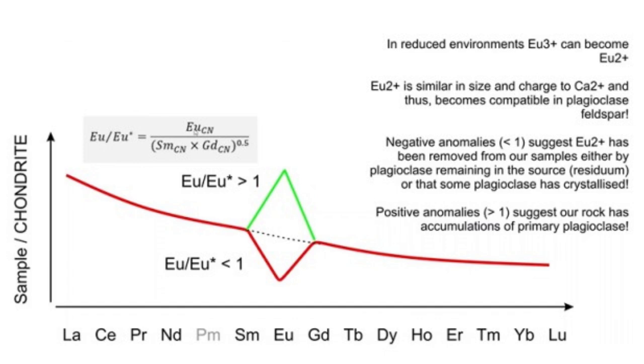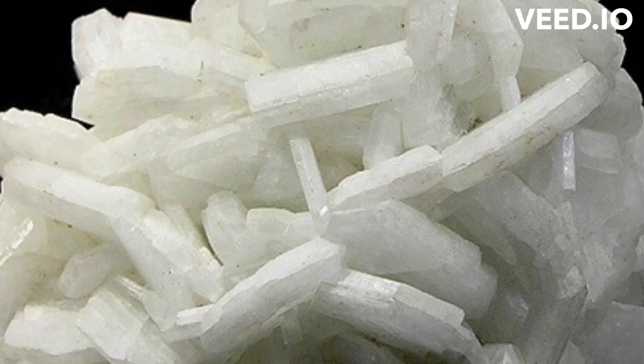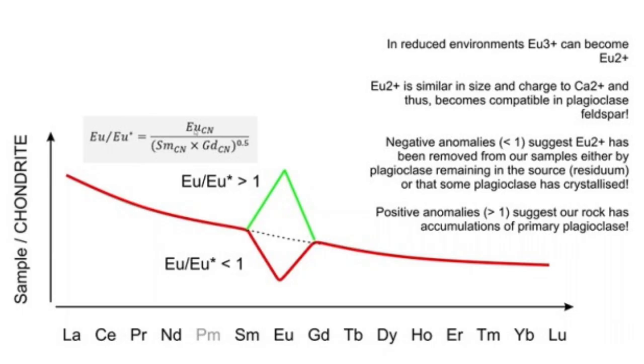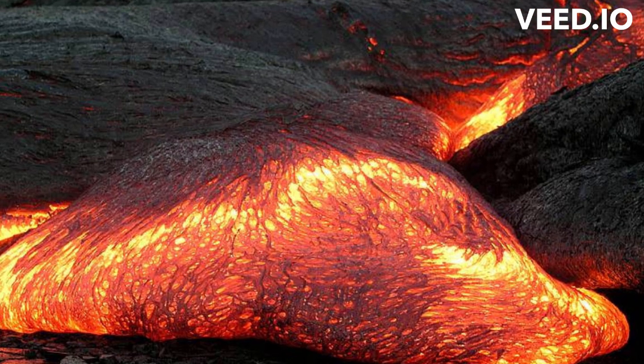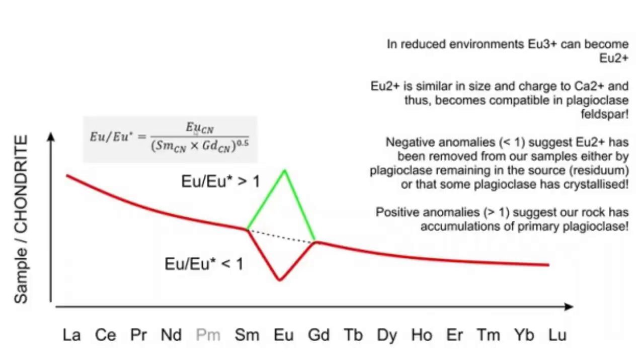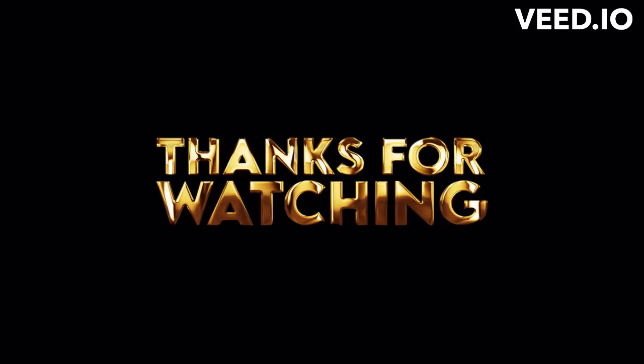Conversely, if magma accumulates plagioclase crystals before solidification, its rock composition will display a relatively positive europium anomaly.